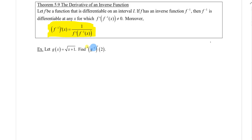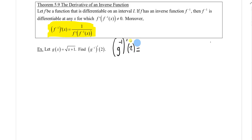Let's look at this notation. It says: find g inverse prime of two — that means finding the derivative of the inverse function at the particular value two. What I would do is start by writing the formula with the indicated value, which is two. So that's one over g prime — and I'll stop right here — how do you find g prime?